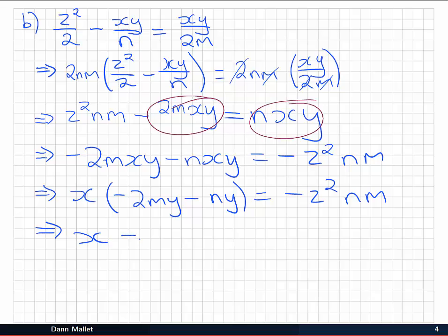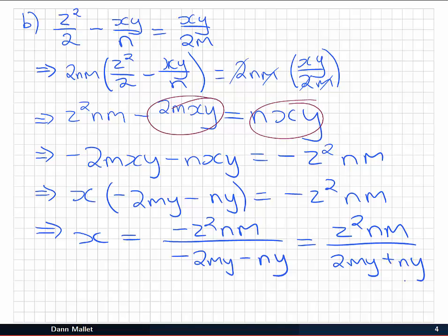So I have x on the left equal to minus z squared nm all divided by minus 2my minus ny. And that's pretty much it. We could also note that there's a minus all through the top and the bottom here. There's a common factor of minus 1, in other words, which can be cancelled to leave us with z squared nm over 2my plus ny. And then we've solved for x.